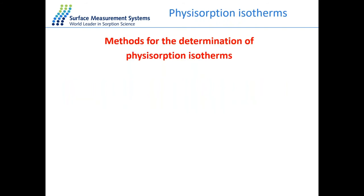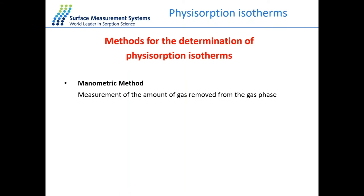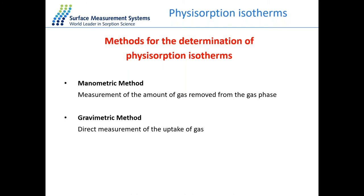What methods can we use for determination of physisorption isotherms? The most common is the manometric or volumetric method, used for collection of liquid nitrogen adsorption isotherms, where we measure the amount of gas removed from the gas phase. The other method, which is a direct method, is the gravimetric method. The gravimetric method involves direct measurement of the uptake of gas or vapor molecules. The focus of this talk is on outgassing conditions and adsorption isotherm collection using the gravimetric method.